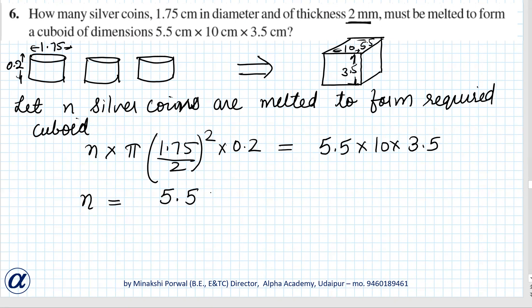Okay so it is 22 by 7, so this way, and 1.75 into 1.75, 2 and 2 will come here, okay, into 0.2.